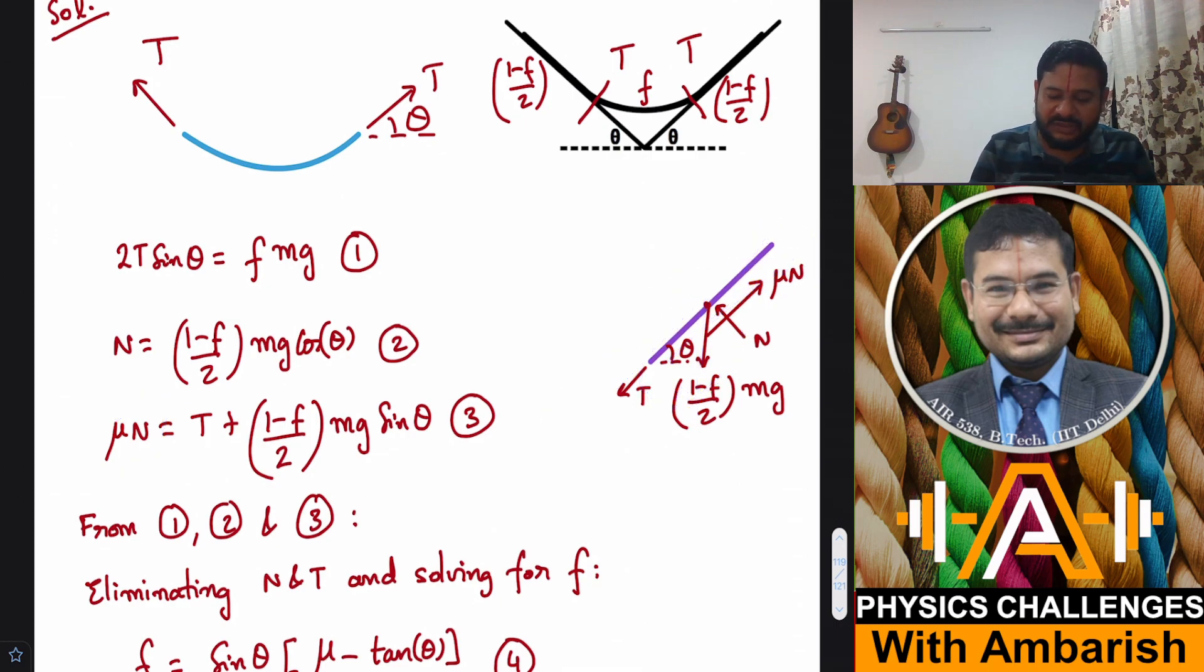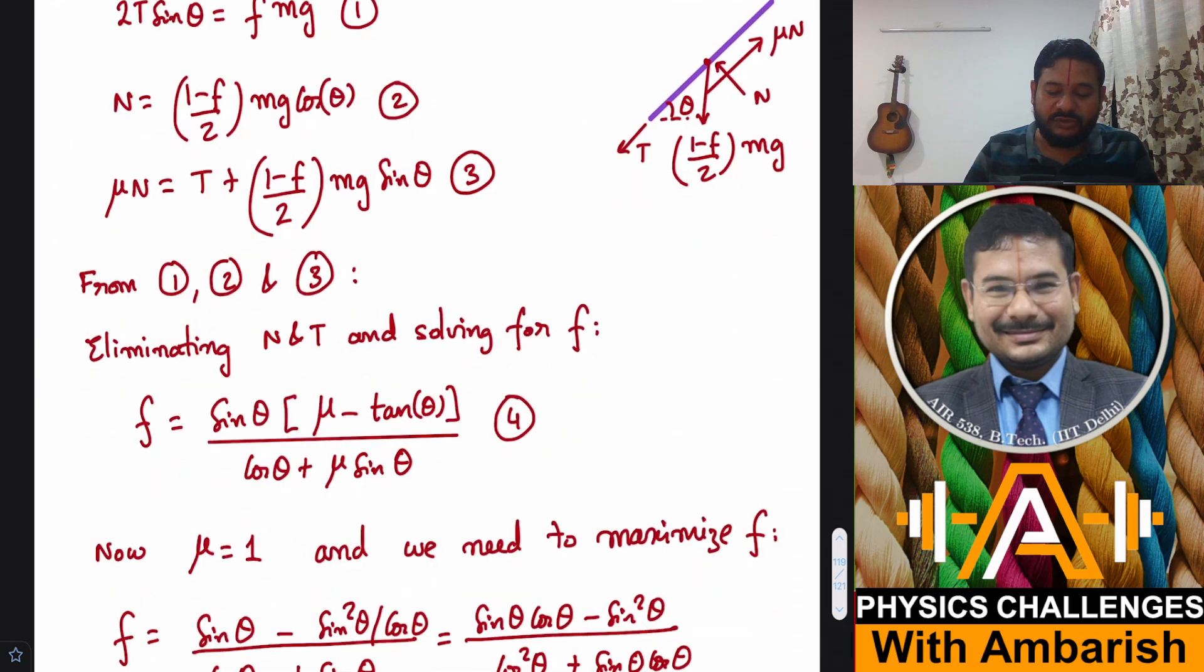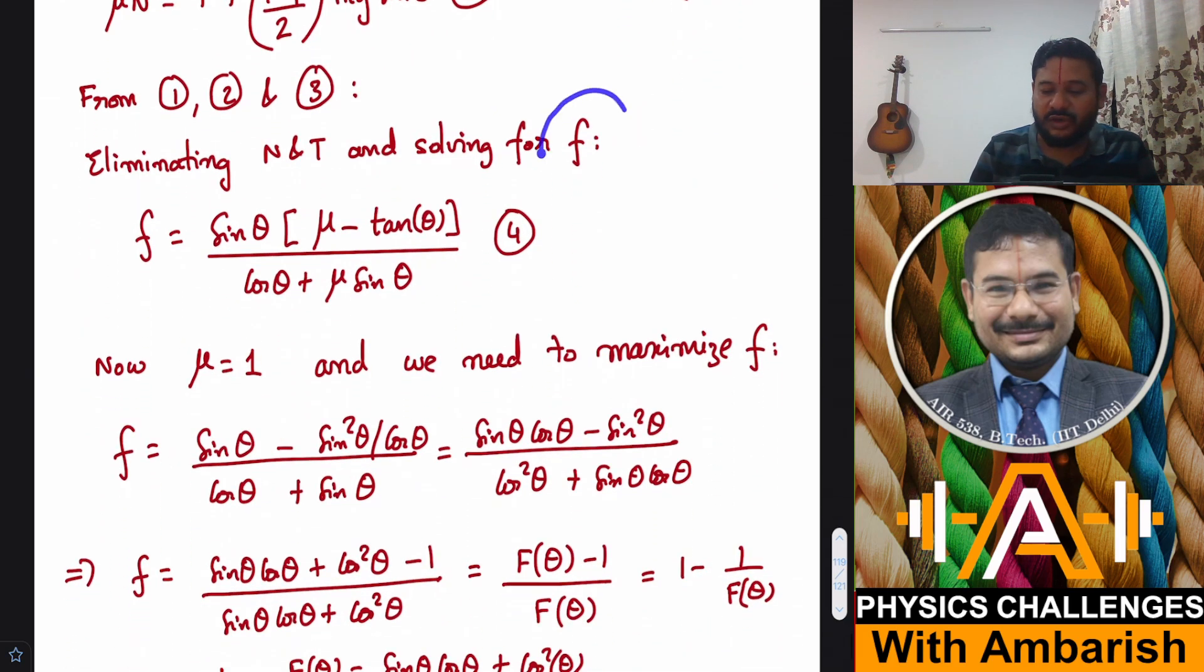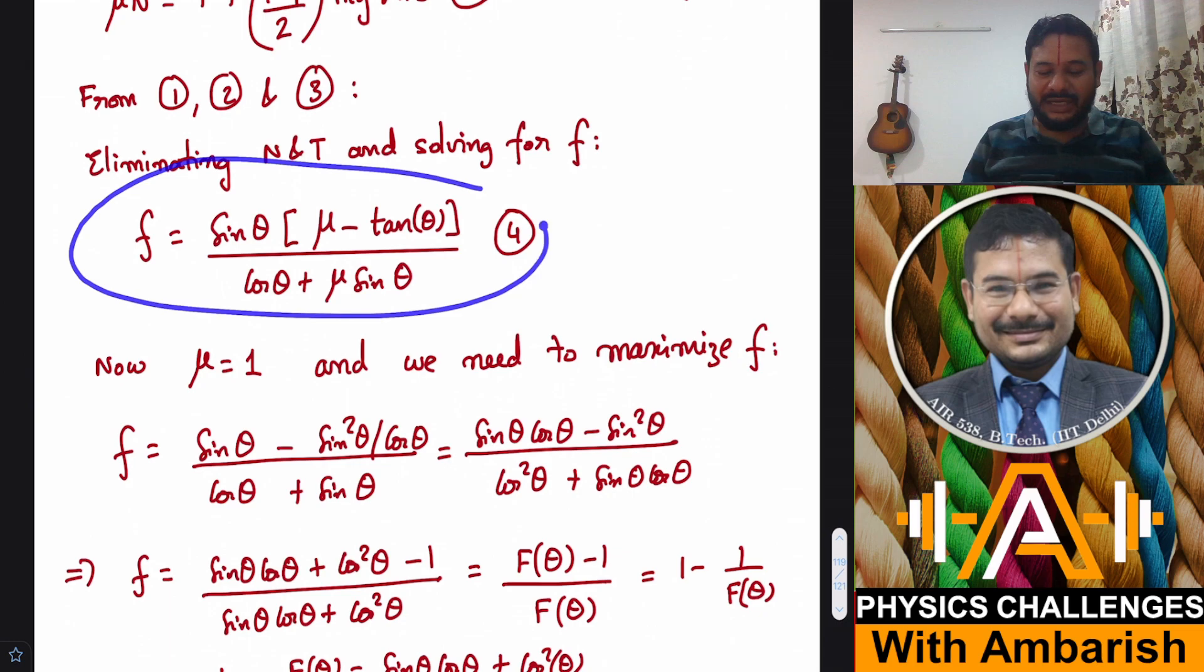Now you consider equations 1, 2, and 3. The unknowns we have are T, f, and N. So we can eliminate T and N and we can solve for f. If we eliminate N and T and we solve for f, I have not done the entire dirty work here, but if you just eliminate, you can solve for f and this is what you get.